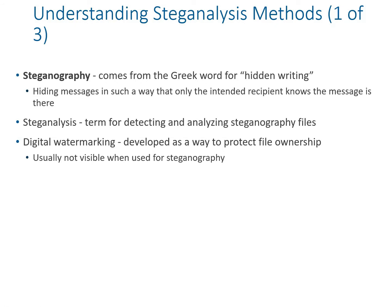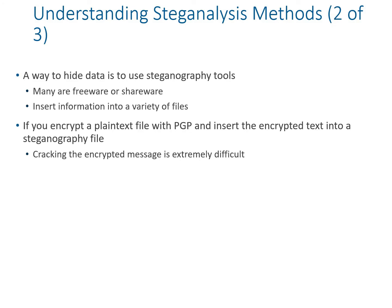Now we'll understand the steganalysis method, starting with steganography, which comes from a Greek word meaning hidden writing — hiding messages in such a way that only the intended recipient knows what is written. It is one of the complex methods derived from historical encryption techniques. Steganalysis is the term for detecting and analyzing steganography files. Digital watermarking involves hidden text in files that you cannot see. Even if you check the file size it appears identical, but the MD5 hash code will be different, distinguishing which file has been altered.